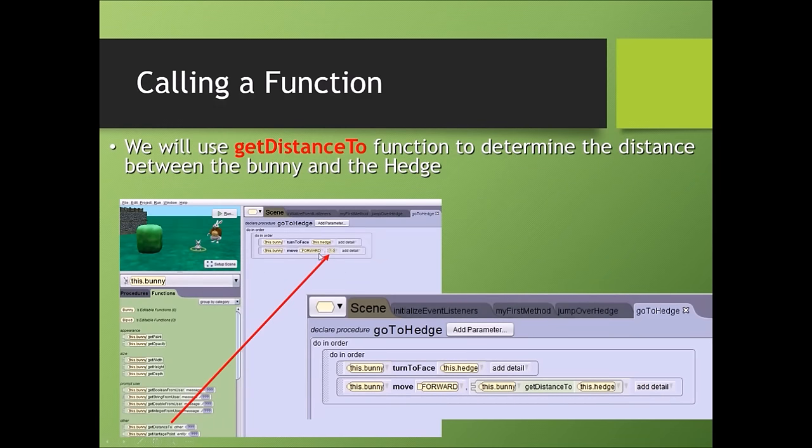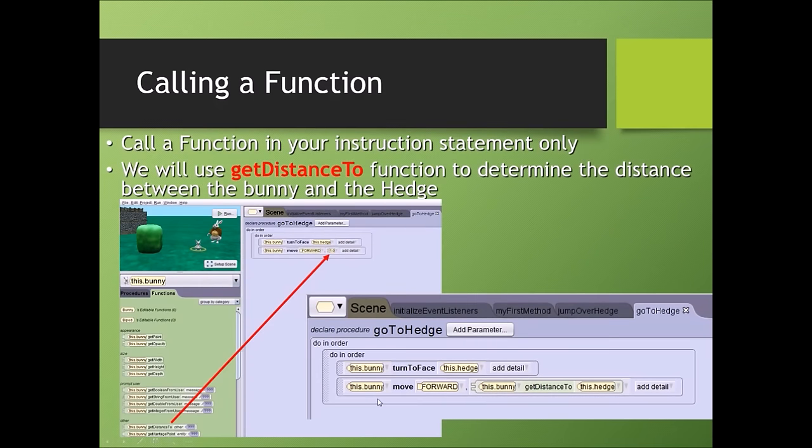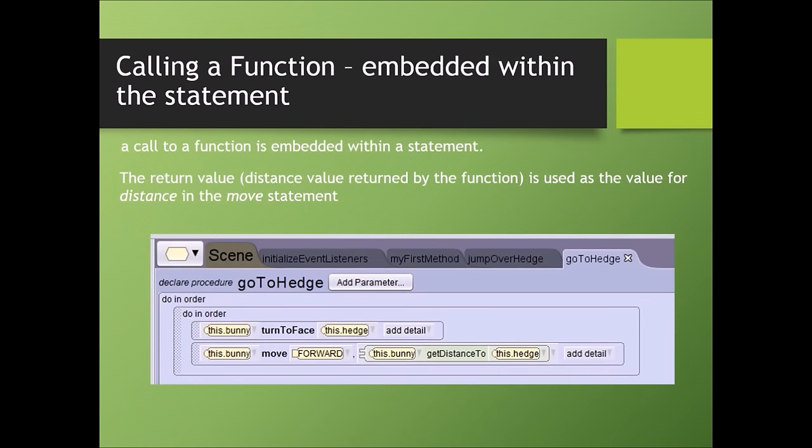In our statement bunny move forward one meter, we replaced one with a function because we are not going to do the math for the bunny to move to the hedge. We are just going to let the function get the information for us. After I'm done, my instruction would look like bunny move forward this bunny get distance to the hedge. The return value, the distance value returned by the function, is used as the value for the distance in the move statement.